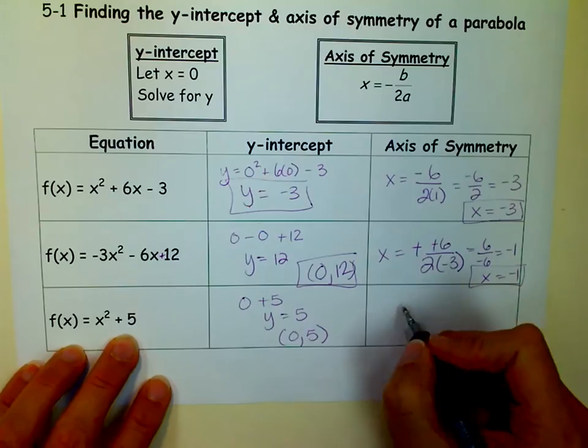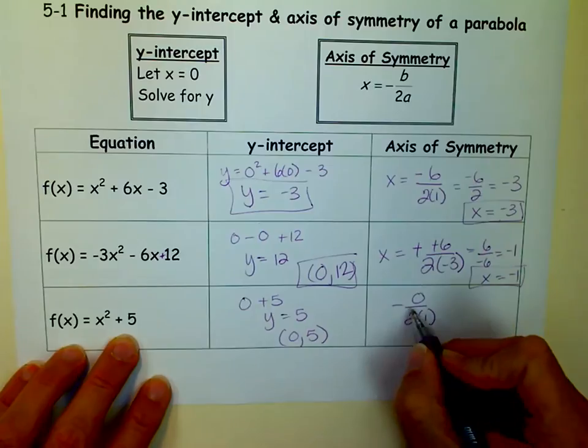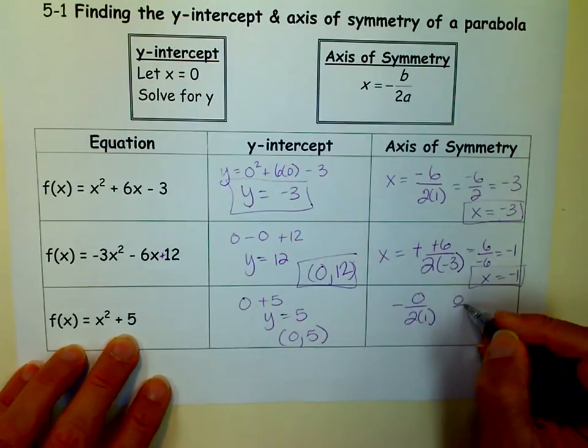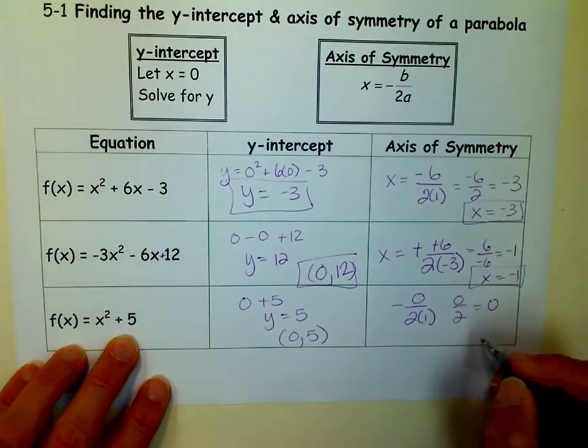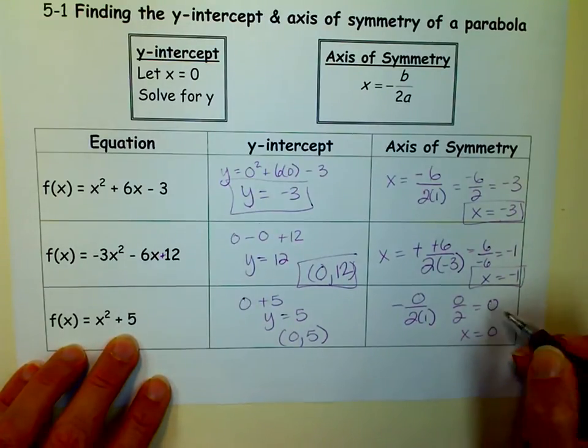And for the axis of symmetry, I get negative b over 2a, and that's just 0. You can't really take the opposite of 0. It's just 0 divided by 2, which equals 0. So in this case, my axis of symmetry is at x equals 0.